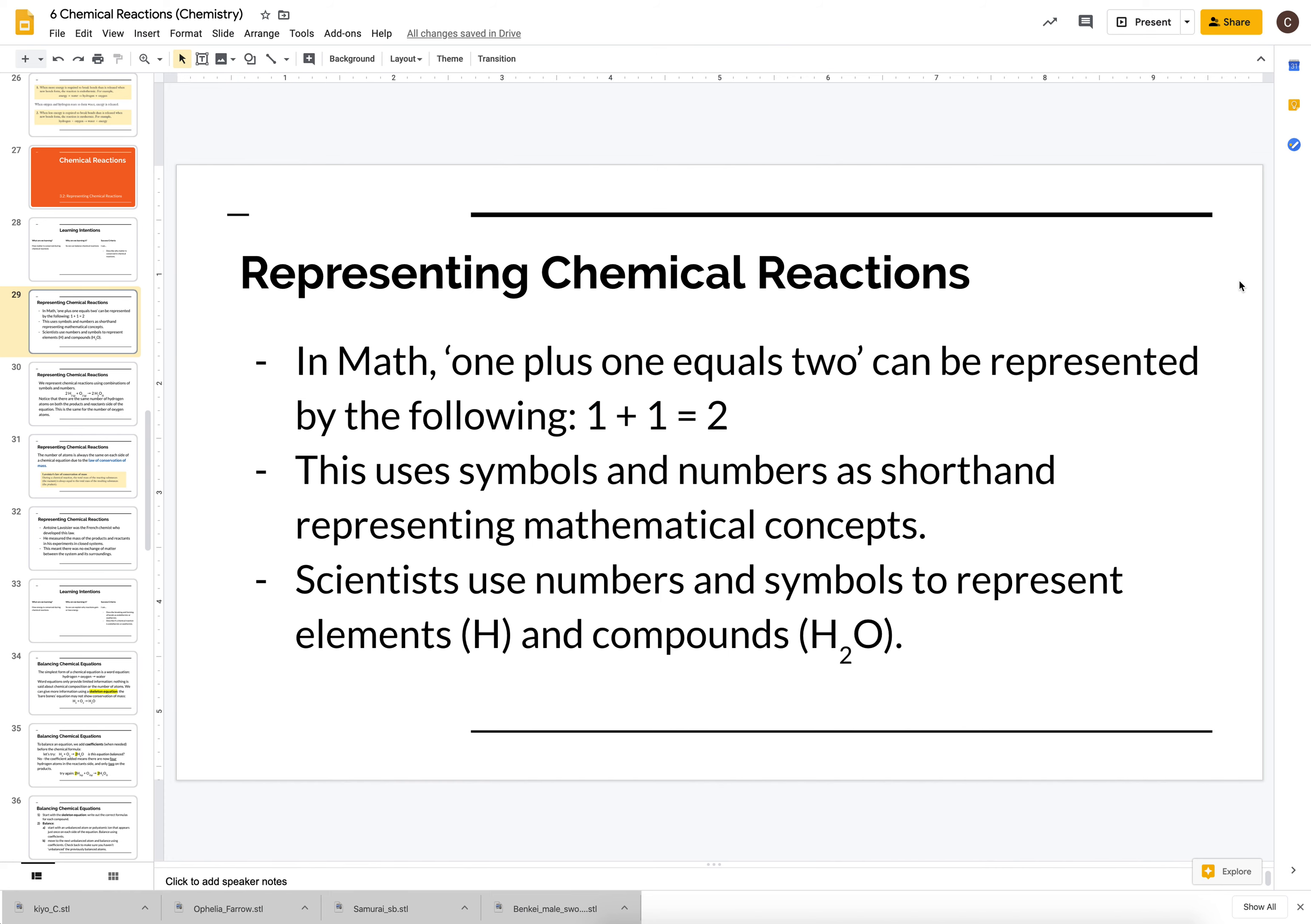Just like mathematicians will use symbols to build their equations, scientists will also use numbers and symbols in order to represent chemical reactions. Like we've seen before, we can represent compounds using the atomic symbols. If it's an element it'll just have a single atomic symbol. If it's a compound it will have more than one.